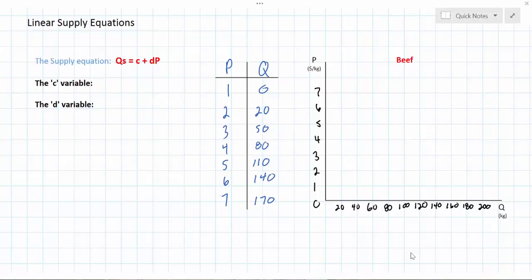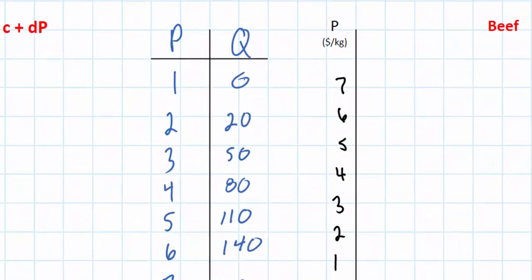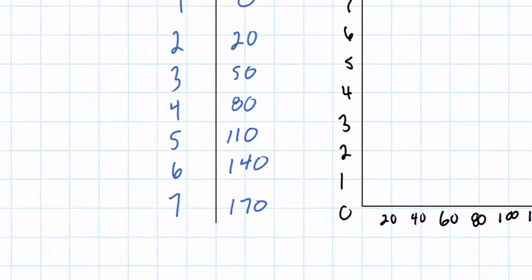In this lesson I'm going to introduce how supply for a particular good can be represented using a linear supply equation. We're going to be looking at the market for beef today, for which we have a supply schedule. As you can see, as the price of beef increases, the quantity that farmers are willing and able to produce increases as well.